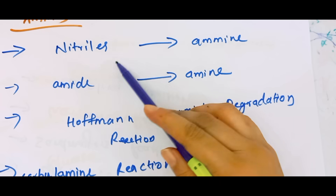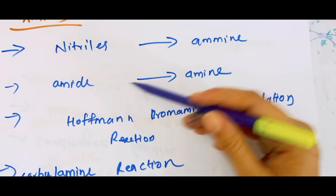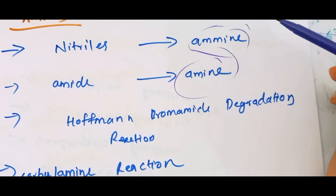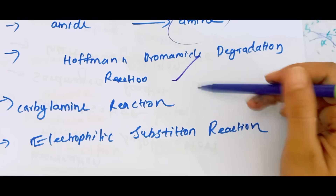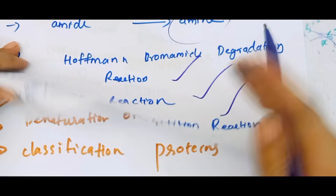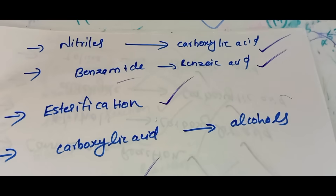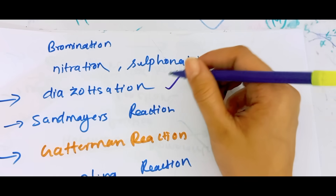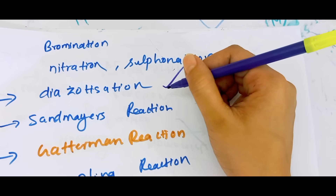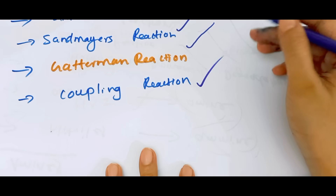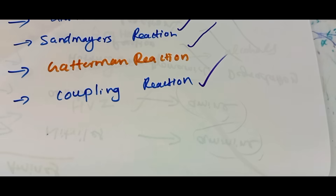Amines — how to convert nitriles to amine, amide to amine. Amines are prepared by two methods: Hofmann bromamide degradation reaction, carbylamine reaction. Electrophilic substitution reactions of aniline: bromination, nitration, sulphonation. Diazotization, Sandmeyer reaction, Gattermann reaction and coupling reactions — this is the main item.